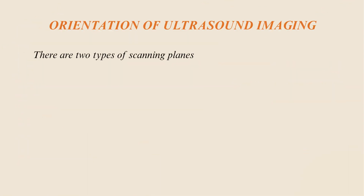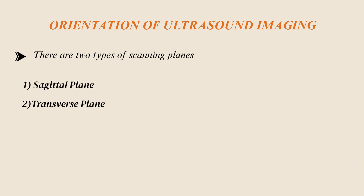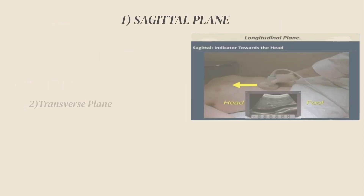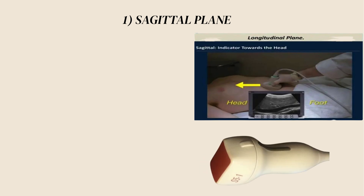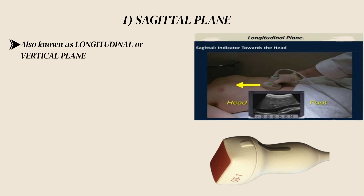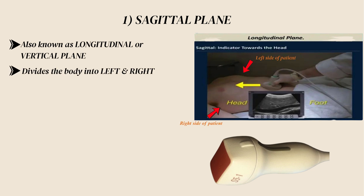There are two types of scanning planes. Number one is the sagittal plane, and number two is the transverse plane. The sagittal plane is also known as the longitudinal or vertical plane, and it divides the body into left and right.